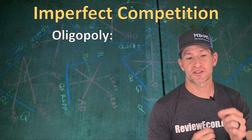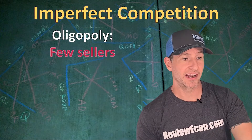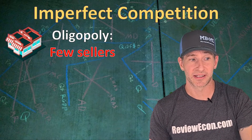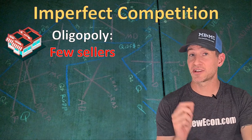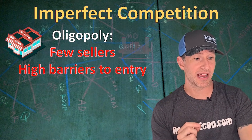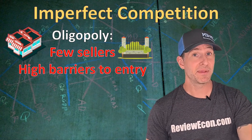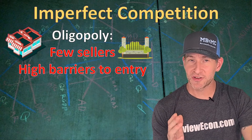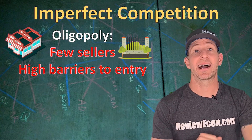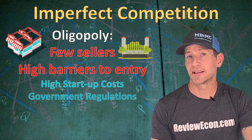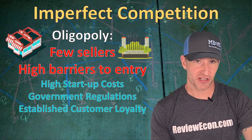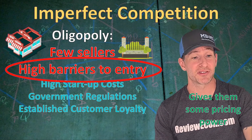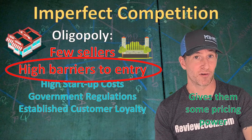The next imperfectly competitive market structure is an oligopoly. Here we have a few sellers dominating this market, and the reason we only have a few sellers is because barriers to entry are extremely high. That means it is difficult for firms to enter this market and compete. Barriers to entry include things like high startup costs, government regulations, and established customer loyalty. And for oligopolies, it is those high barriers to entry that give them pricing power.